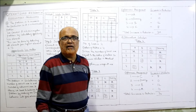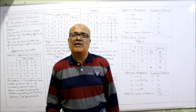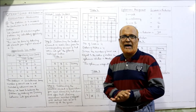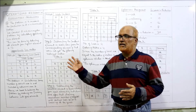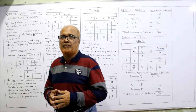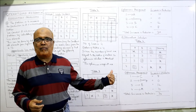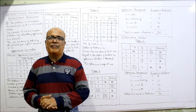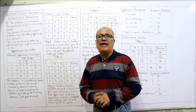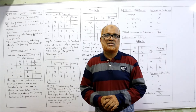In this problem there were two new points. First, it was an unbalanced problem — we made it balanced by adding a dummy column. Second, it was a production (maximization) problem — we converted it into minimization using the opportunity loss matrix and then solved it. Finally we got the optimum assignment. This is the end of the 8th problem. Two more problems are left — we will continue in the next video.